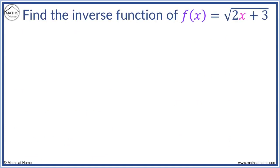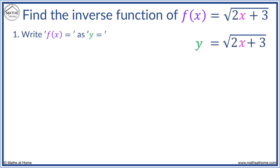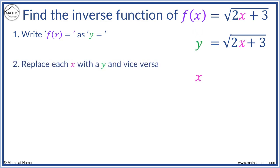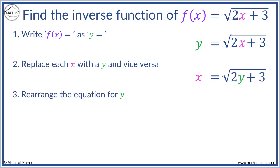Find the inverse function of f of x equals the square root of 2x plus 3. We write y equals the square root of 2x plus 3. We replace y with x and x with y. We now rearrange this equation for y. y is inside a square root, so we square both sides.